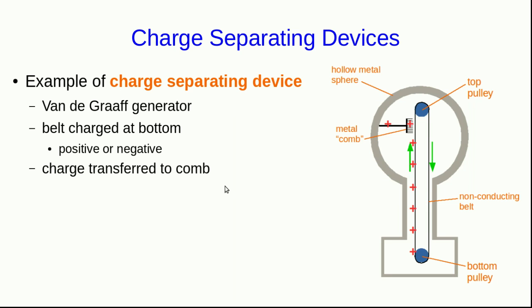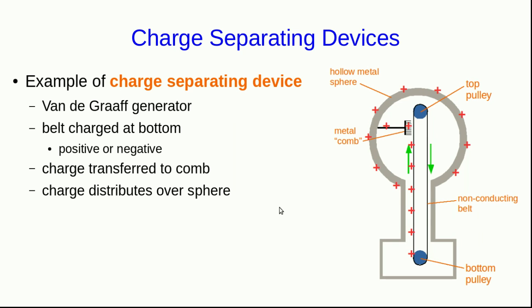The charge is then transferred to a metal comb. The reason it transfers is that the charge, very near the comb, polarizes the comb. Its tips become very charged with opposite charge to what's on the belt, and so they pull the charge off of the belt. Then, because that metal comb is connected to a hollow metal sphere, and we know that charge collects on the outside surface of metals, the charge distributes over the surface of the sphere.